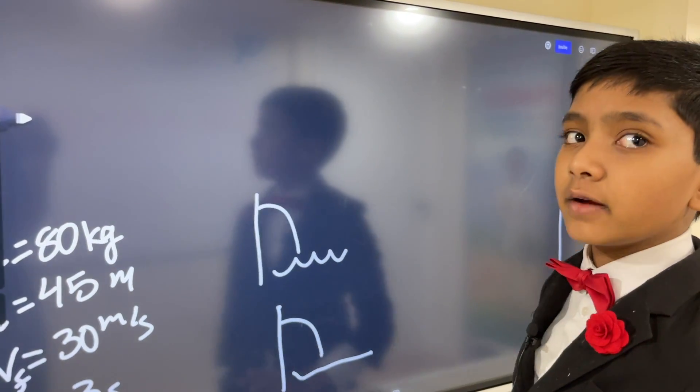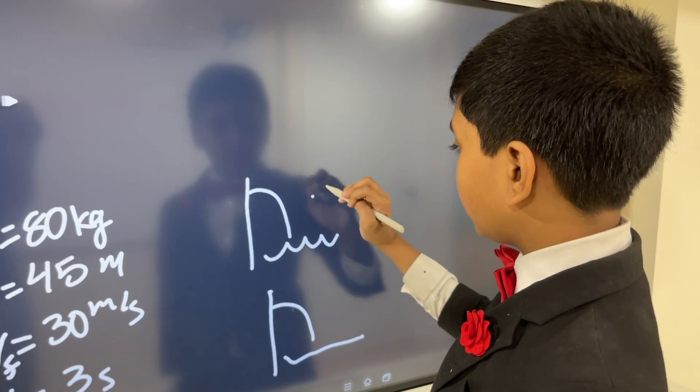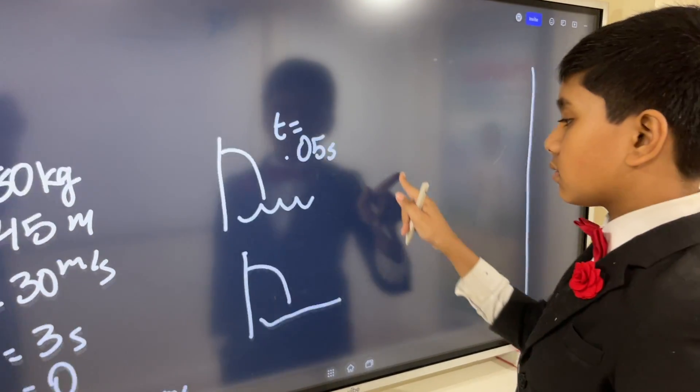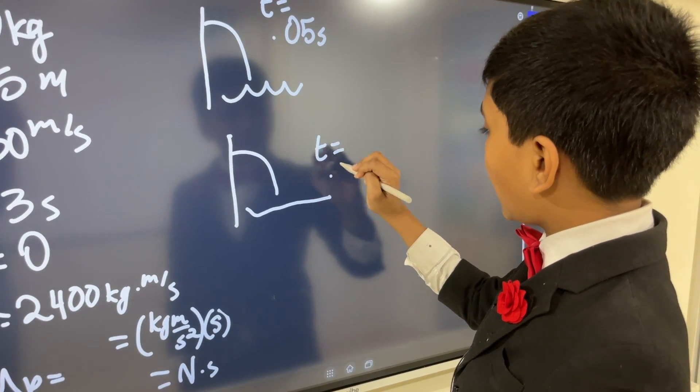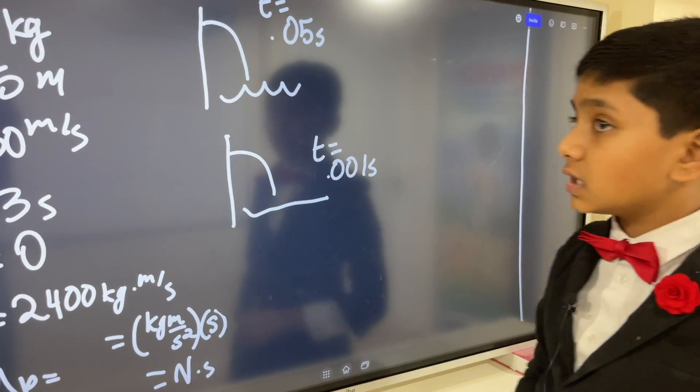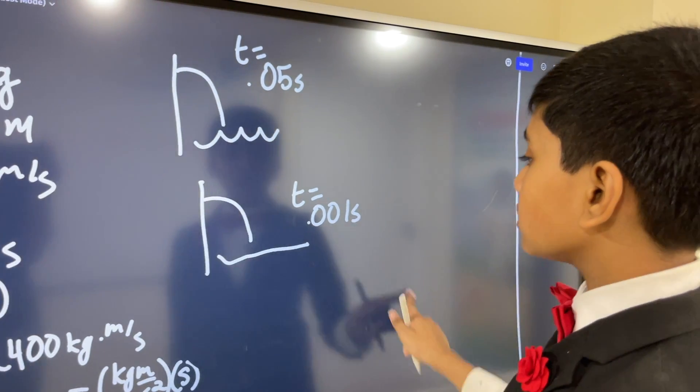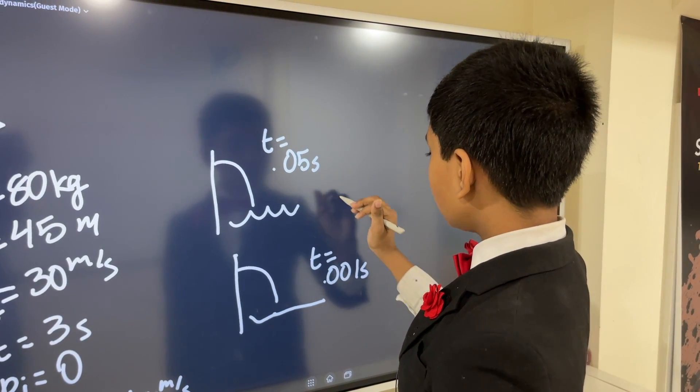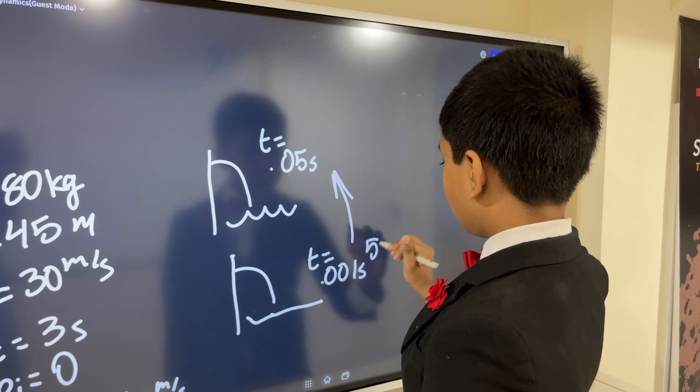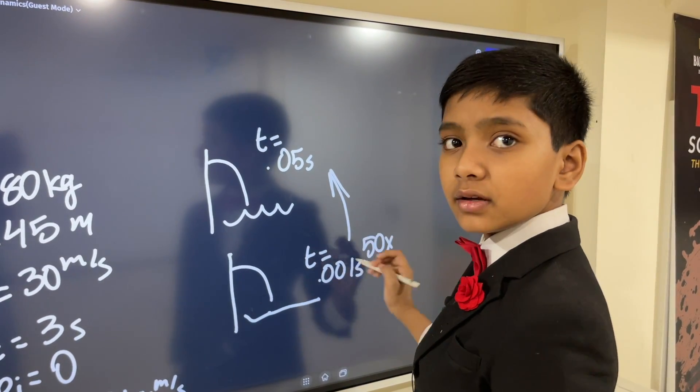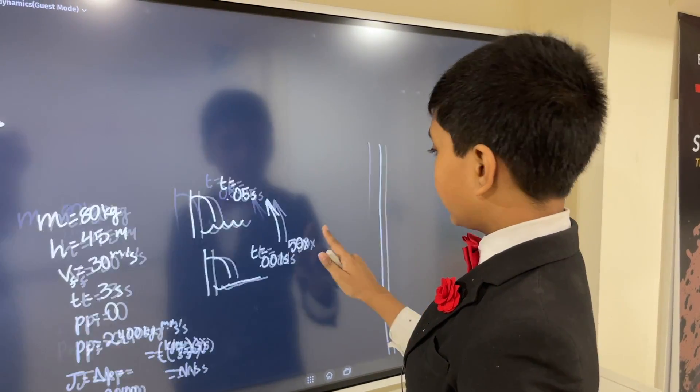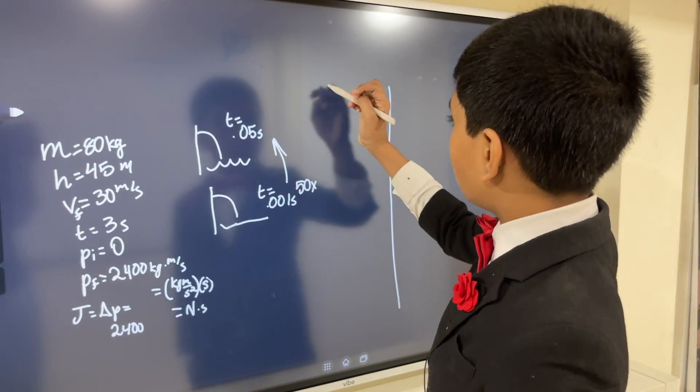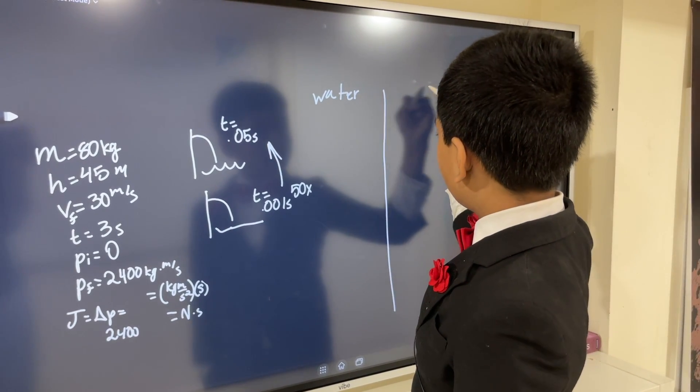So for the water scenario, his impact time is 50 milliseconds, or 0.05 seconds. Meanwhile, when he jumps on concrete, the impact time is 0.001 seconds. So here, you can already predict that the force exerted on him here is probably going to be about 50 times worse than this one over here because the collision time here is 1/50 what it is over there, and they're going to experience the same impulse because they have all the other conditions the same. Okay,